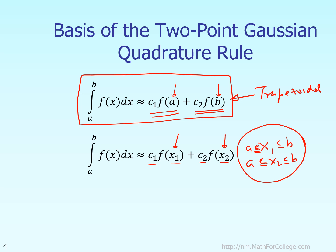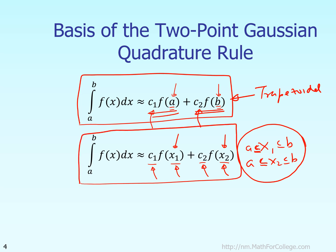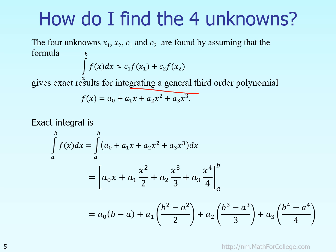Having four choices — C1, x1, C2, x2 — compared to just two in the trapezoidal rule is significant. We can now say the formula is exact for a third-order polynomial, because matching the coefficients of A-naught, A1, A2, and A3 yields four equations for four unknowns. With only two unknowns in the trapezoidal rule, we could only match up to a first-order polynomial (A-naught + A1·x).